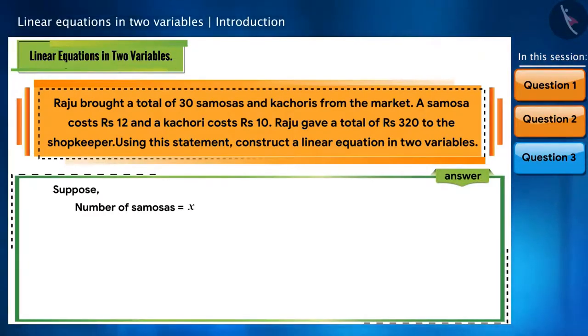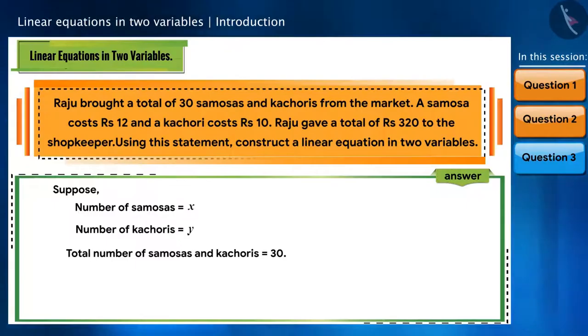Suppose the number of samosas taken by Raju is x and the number of kachoris is y. He has a total of 30 samosas and kachoris. So, our equation will be x plus y is equal to 30. How to write it in general form? In this way: x plus y minus 30 is equal to 0.